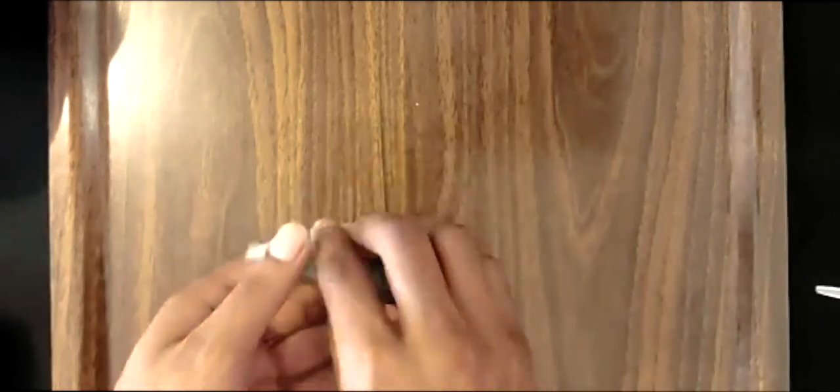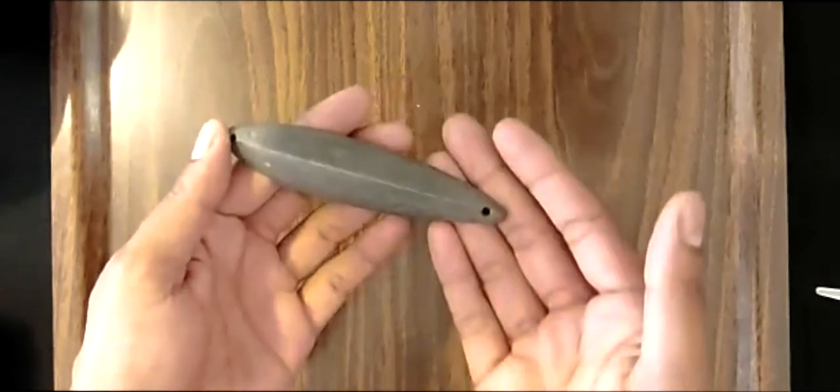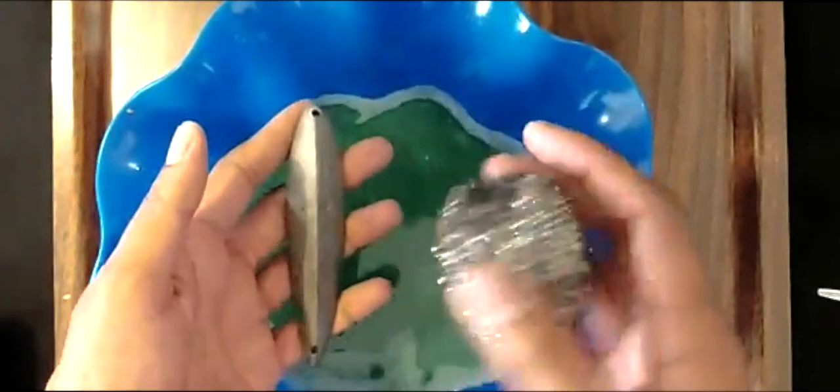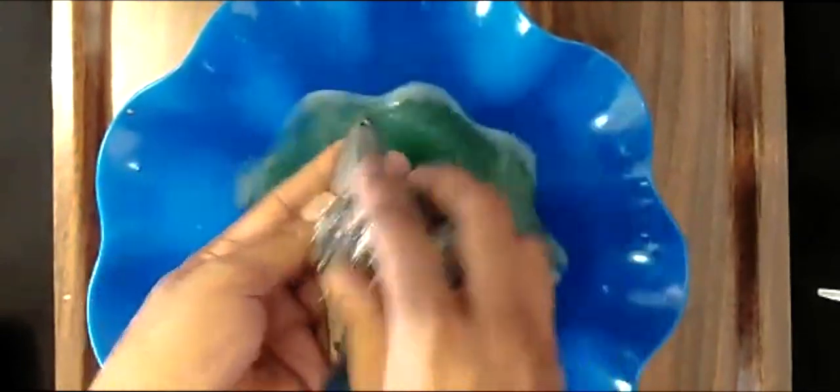All right guys, there's our white metal spoon. I'm going to quickly show you how we clean this up. First thing you're going to do is take your Sunlight liquid and some water, your steel wool, and clean this up first.